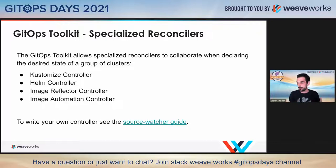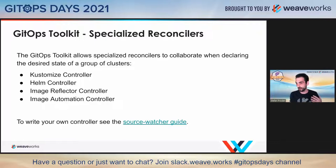The image automation controller will patch your YAMLs using the new version it has detected and commit those YAMLs back to your Git repo. Then Kustomize or Helm controller will apply those changes on the cluster. This is how you can fully automate patch releases, CDEs, and so on, without any kind of manual intervention.